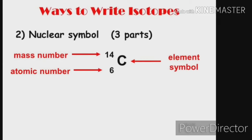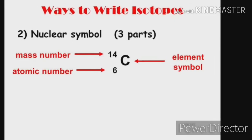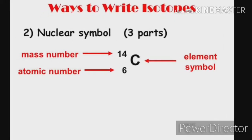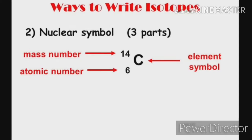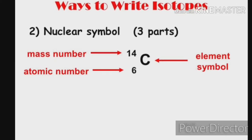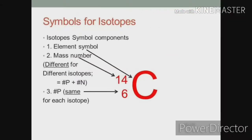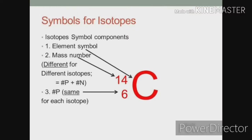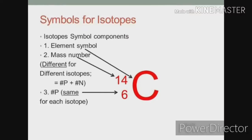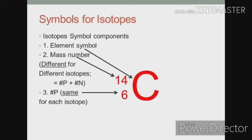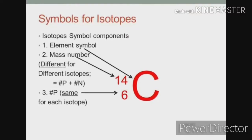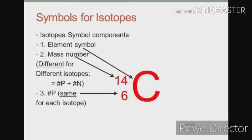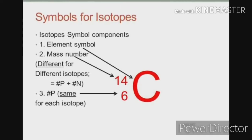As mentioned before, isotopes are atoms that have the same atomic number but different mass numbers. Isotopes are denoted the same way as nuclides, but they are often symbolized only with the mass numbers because isotopes of the same element have the same atomic number.